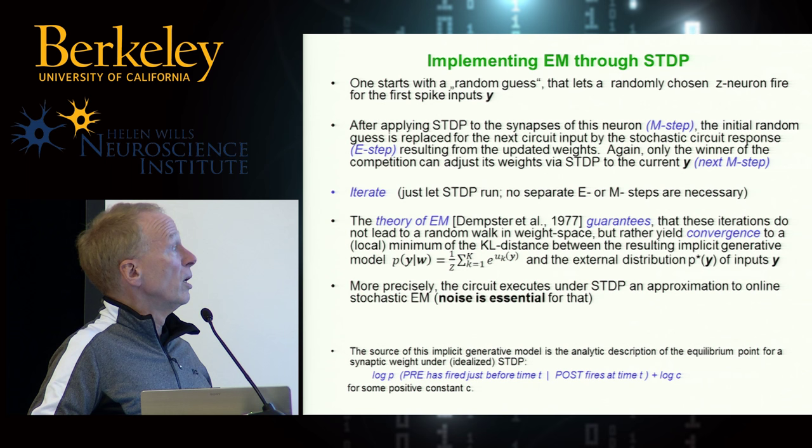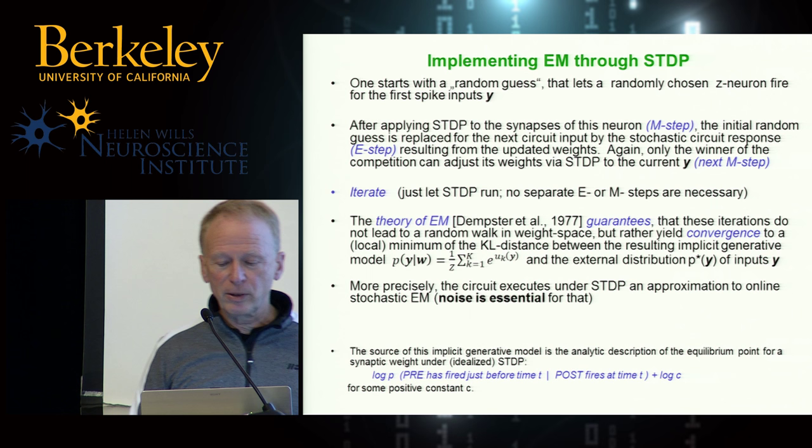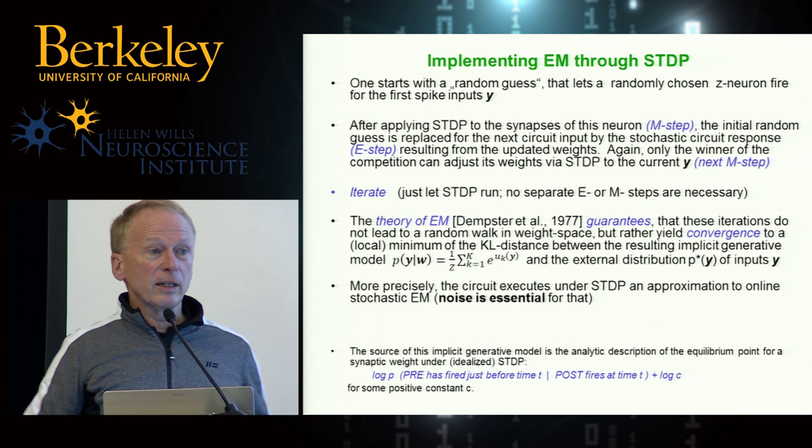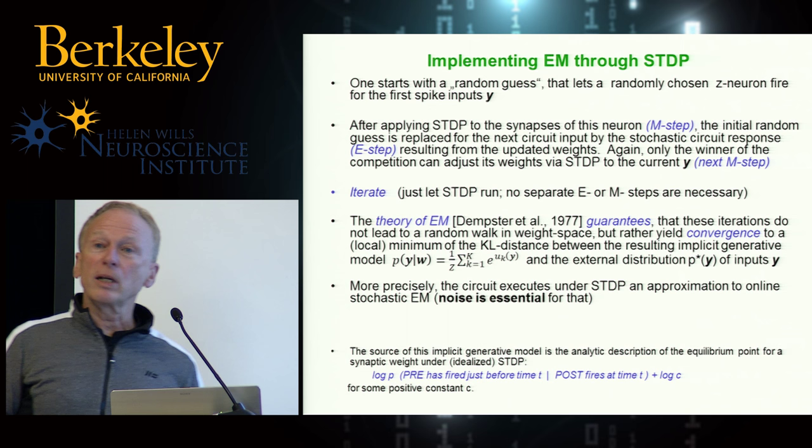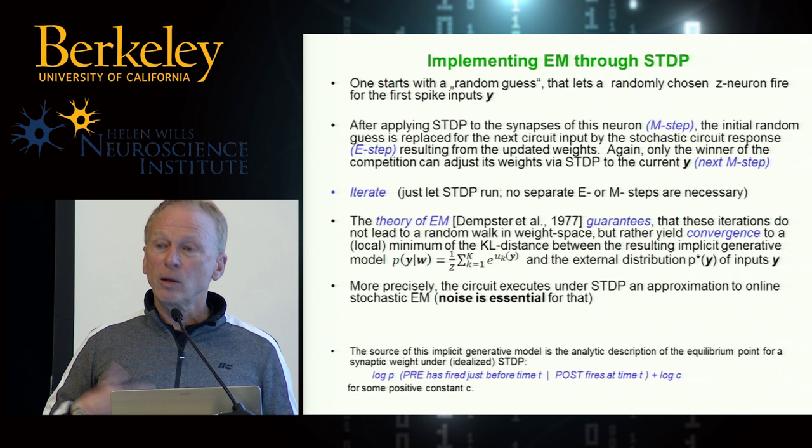What is nice about this theoretical approach — and this is something to look for in neuromorphic engineering — is that the theory provides a gold standard. It tells you under ideal conditions what takes place with this guarantee. In the real world you are not always able to satisfy this gold standard, but at least you know what would be optimal, which is a real advantage compared with just trying out various options.